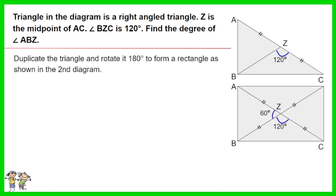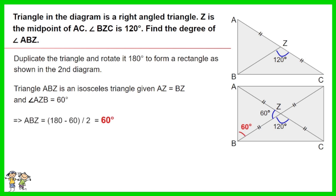Duplicate the triangle and rotate it 180 degrees to form a rectangle as shown in the second diagram. Triangle ABZ is an isosceles triangle, given AZ equals BZ, and angle AZB equals 60 degrees. Angle ABZ equals 180 minus 60, then divide it by 2. The answer is 60 degrees.